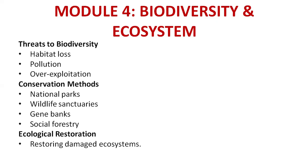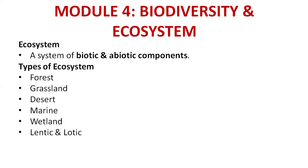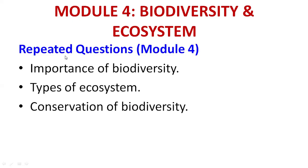Ecological restoration means restoring a damaged ecosystem. An ecosystem is a system of biotic and abiotic components — you can draw a symbolic diagram to represent it. Types of ecosystems include forest, grassland, desert, marine, wetland, lentic, and lotic. Important questions: importance of biodiversity, types of ecosystem, conservation of biodiversity.